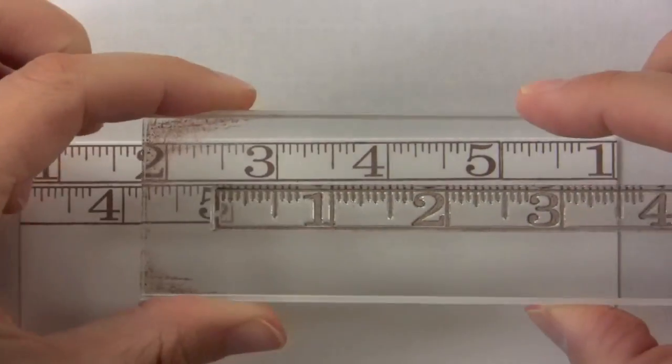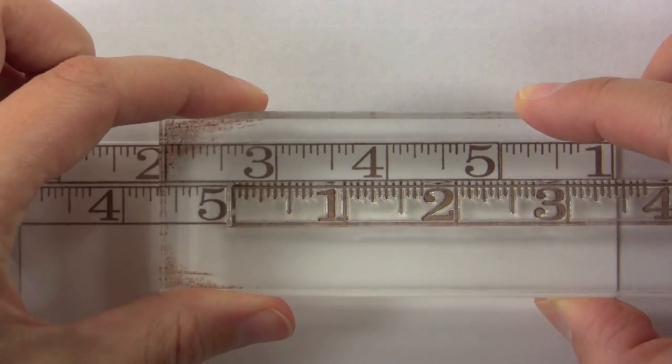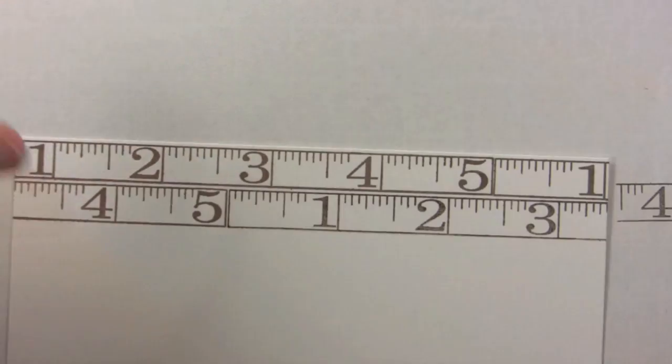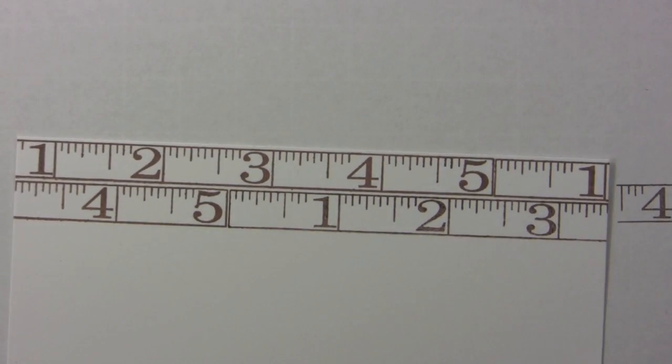Once you have the stamp on the block like that, it's really easy to line up the ruler and stamp several right next to each other, one after the other.